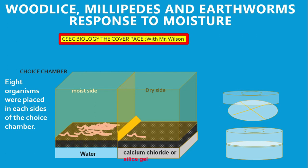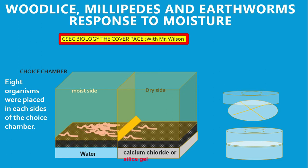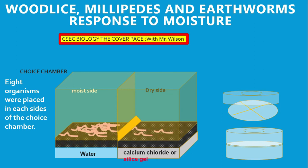You want to ensure that you are paying attention. There's a table that will come after the experiment and you want to be able to fill it out. Your teacher might ask you to summarize what happened using a pie chart to show which side of the choice chamber the millipedes, wood lice, or earthworm prefer, and they might also ask you to use timing to note at what point the organisms moved.